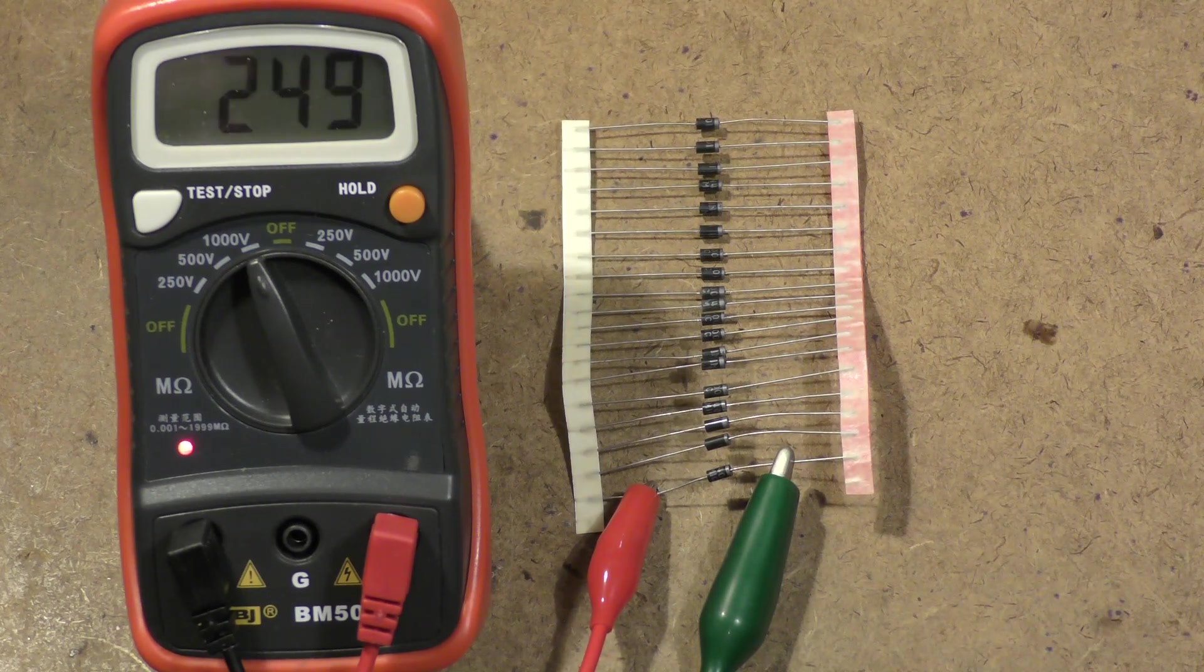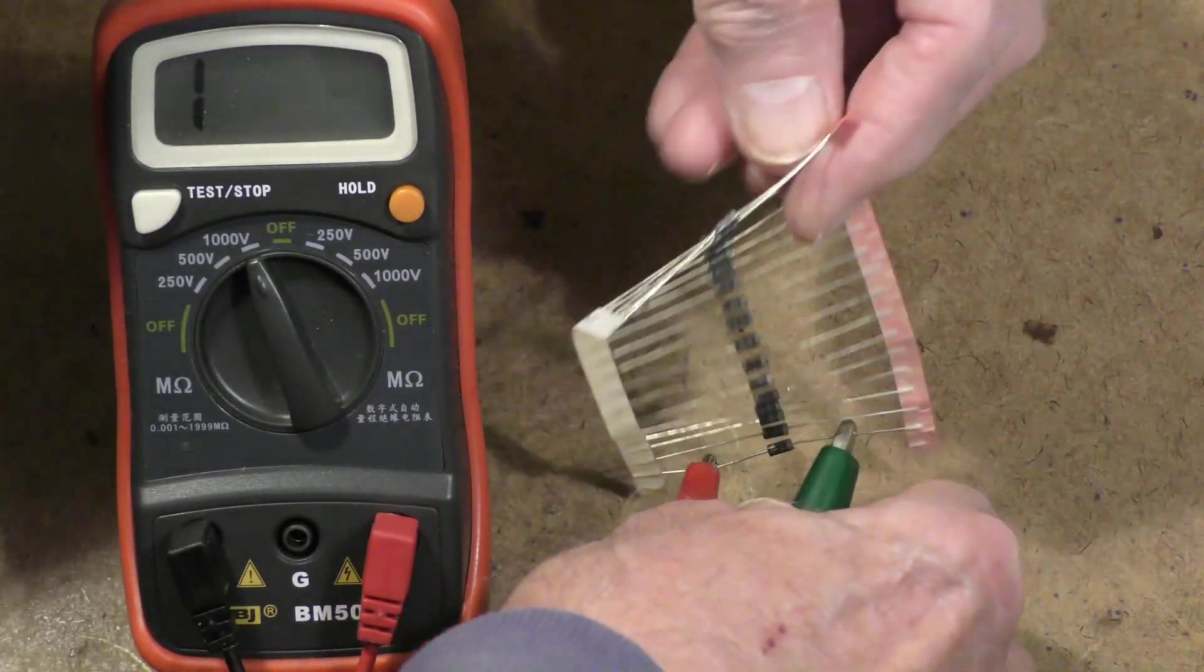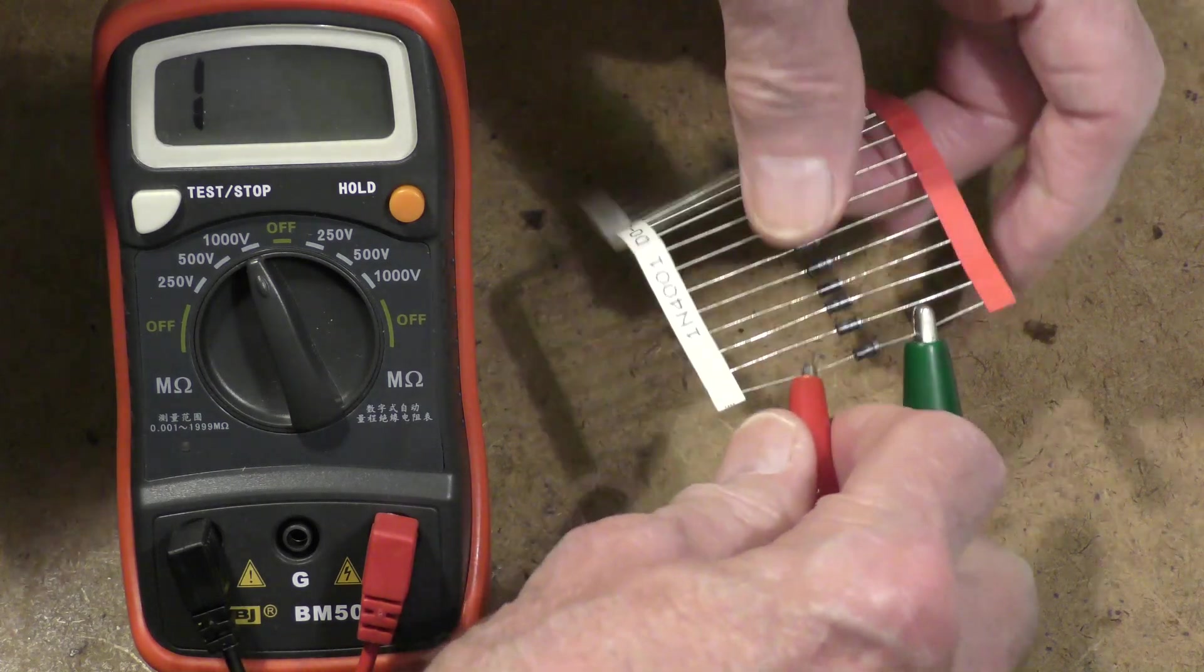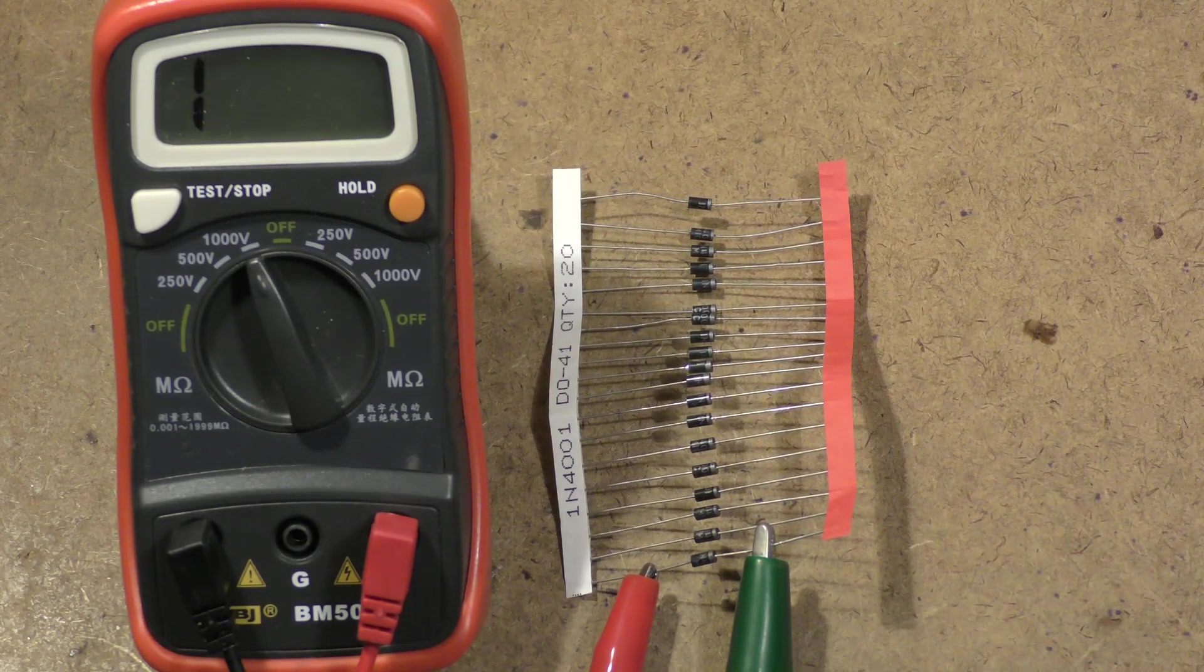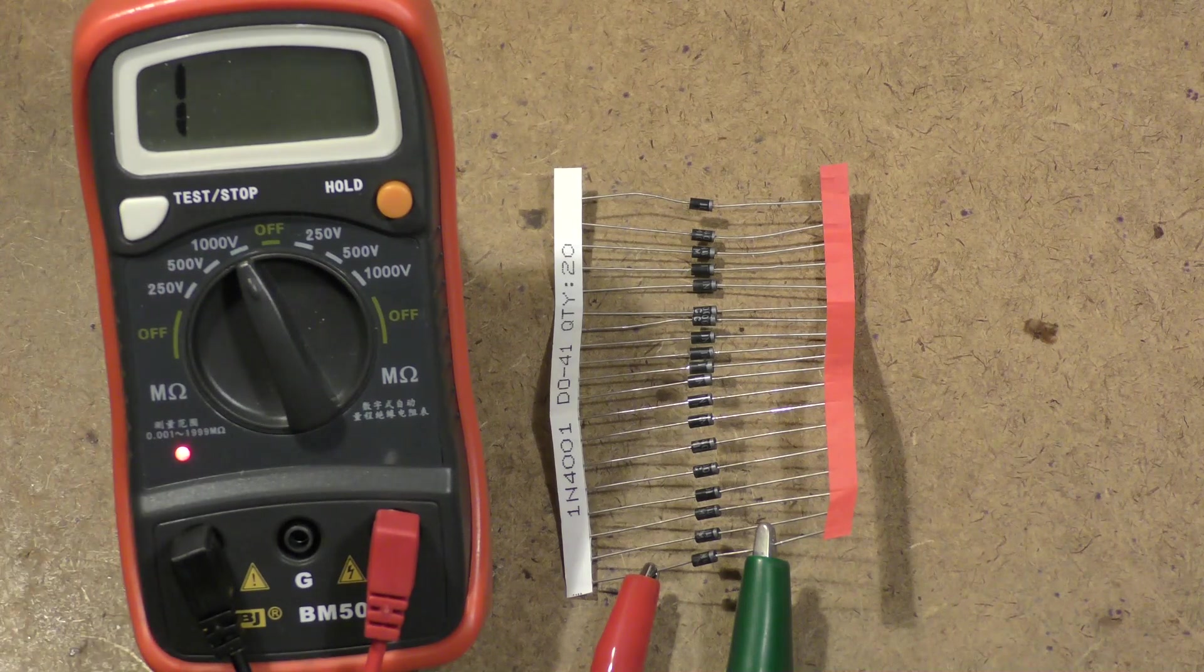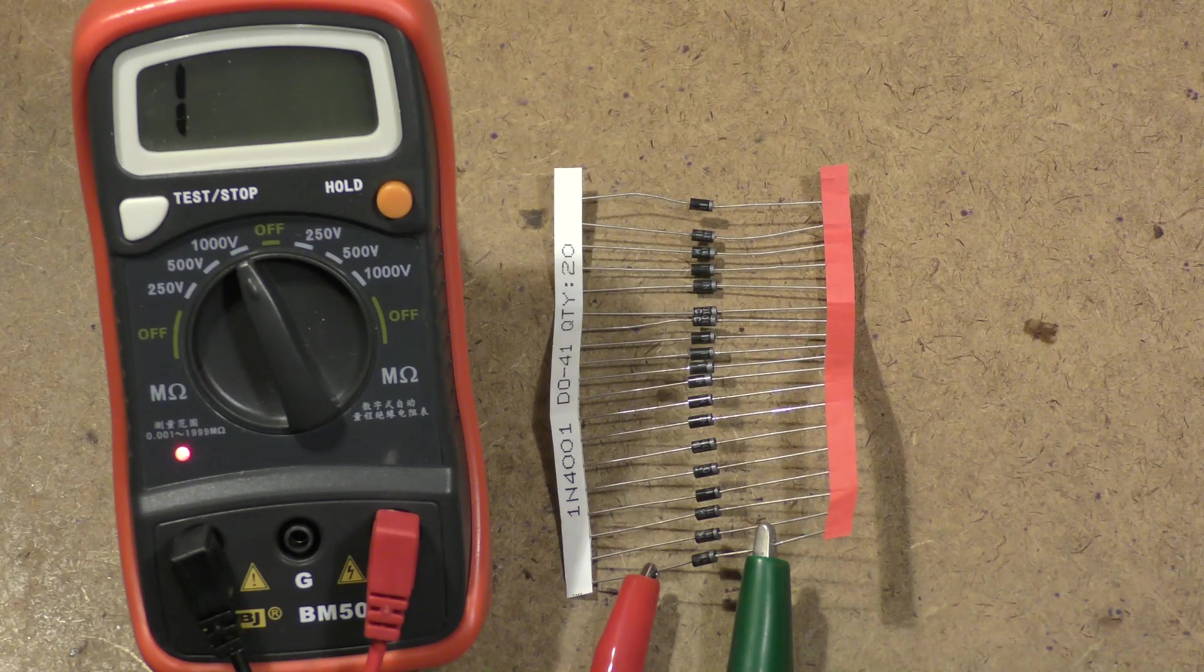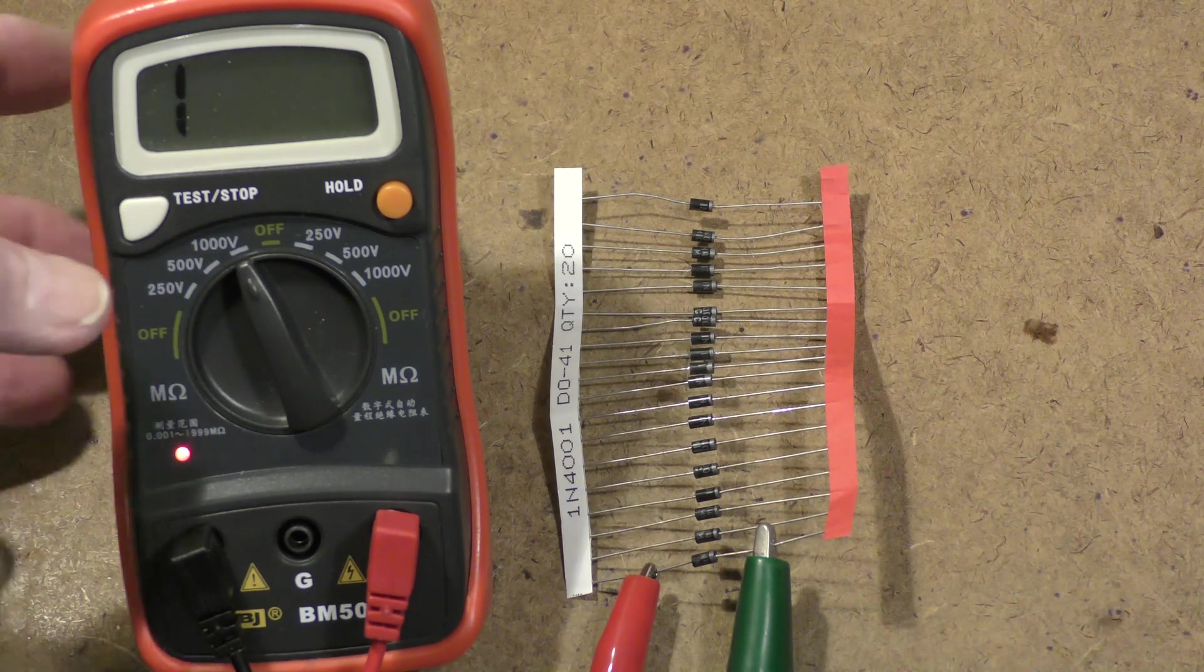Now let's move to the diode at the other end of this string, still in the original seal. You see here on the side it says 1N4001. We're now going to press that and you notice the meter reads one, which means over range—very, very high resistance. Yet this is in the reverse direction.